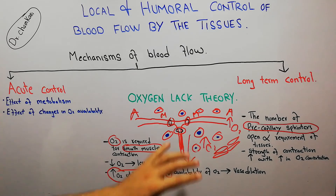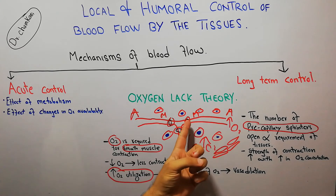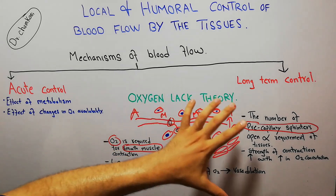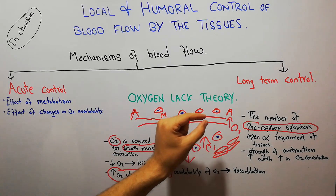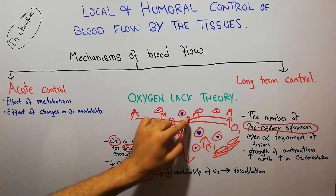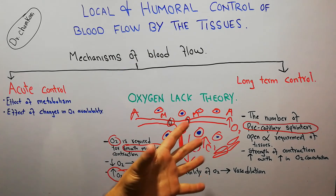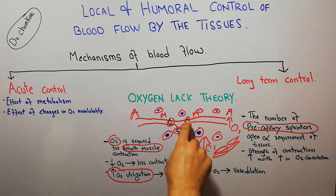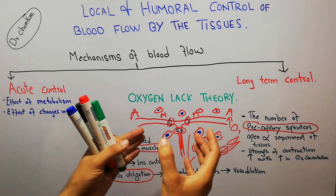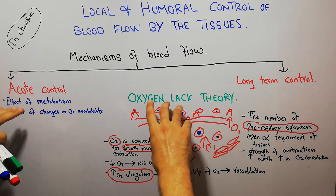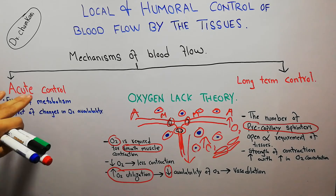The strength of contraction of the pre-capillary sphincter increases with increasing oxygen concentration. To summarize the oxygen lack theory: blood vessels are made of smooth muscles that require oxygen for contraction. If less oxygen is available, the muscles relax, more blood flows, and the tissue receives more oxygen. When oxygen demand is low, more oxygen is available to the smooth muscle, it contracts, and less blood flows.